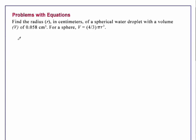Problems with equations. Find the radius r in centimeters of a spherical water droplet with a volume v of 0.058 cubic centimeters. For a sphere, volume v equals 4 thirds pi r cubed.